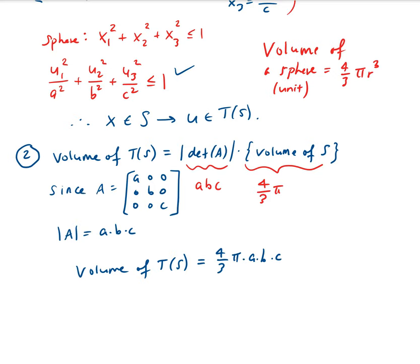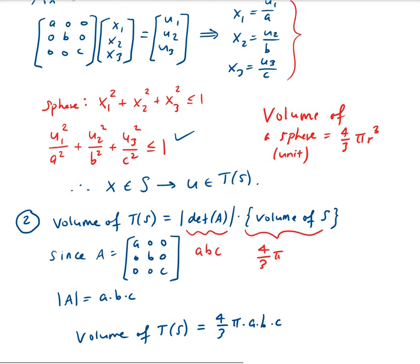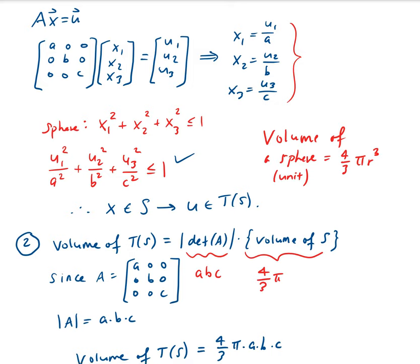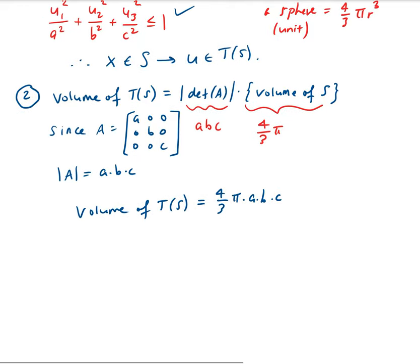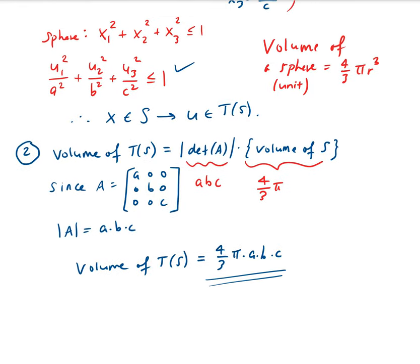That's how you apply the determinant and the transformation theorem. By the way, the volume of this transformation of S — that is actually an ellipsoid, kind of like a football shape but not quite as pointy on the ends.